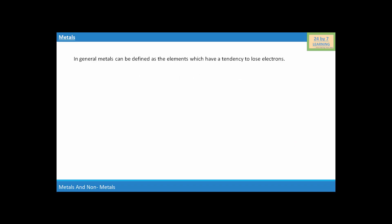In general, metals can be defined as the elements which have a tendency to lose electrons. For example, sodium has an electronic configuration of 2, 8, 1. During a chemical reaction, sodium can lose an electron to a non-metal like chlorine to form a sodium ion that has an electronic configuration of 2, 8.